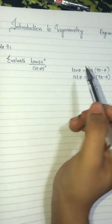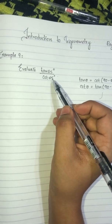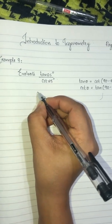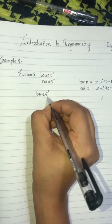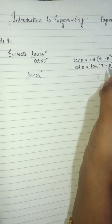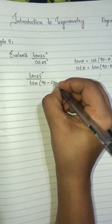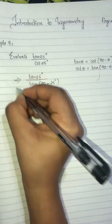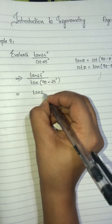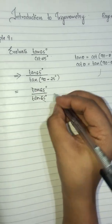We know that tanθ is equal to cot(90-θ) and cotθ is equal to tan(90-θ). Here, we will change tan65 to cot. So tan65 divided by cot25 becomes cot(90-θ) divided by cot25. Since 90 minus 65 equals 25, the cot terms cancel and the result is 1.